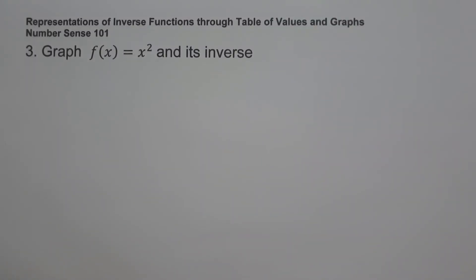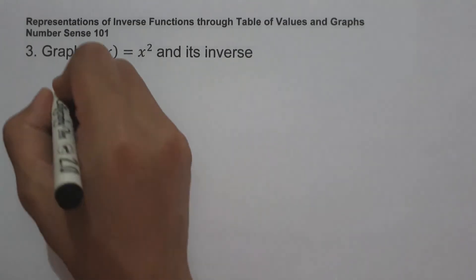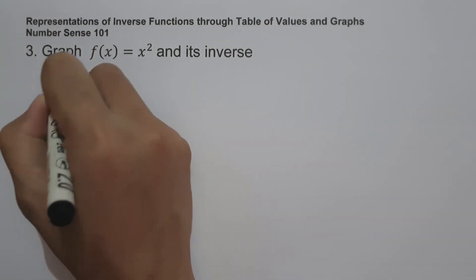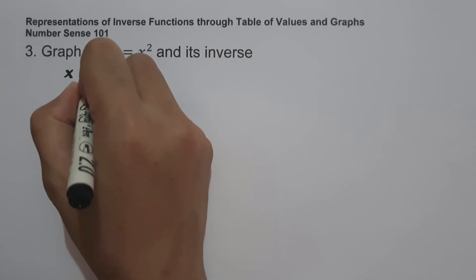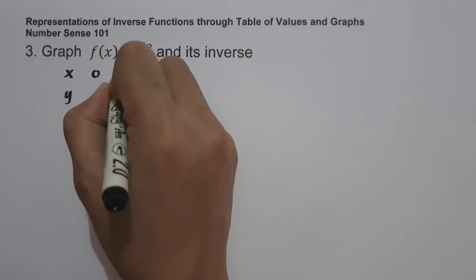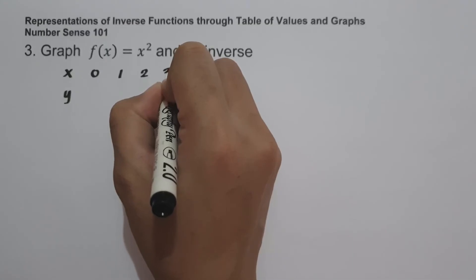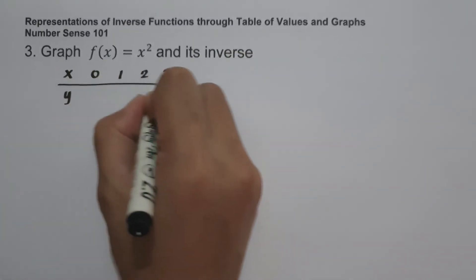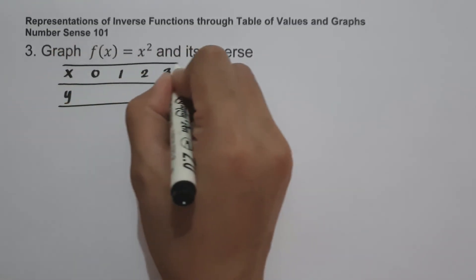On our last example, graph f of x equals x squared and its inverse. The given function is not a one-to-one function because it fails the horizontal line test. Instead of having a full parabola opening upward, we have to restrict our domain to x greater than or equal to 0. To graph the given function, let us construct a table of values with x values of 0, 1, 2, and 3.